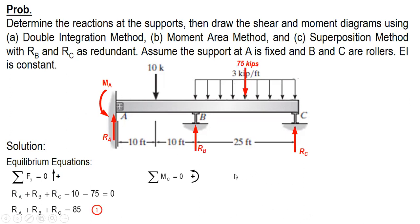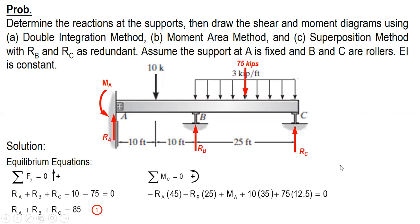Next, taking moment about C: for RB it's clockwise or minus; RA is clockwise; MA is counterclockwise, positive; 10 is positive; 75 is positive. Simplifying and combining constants gives us equation number two.